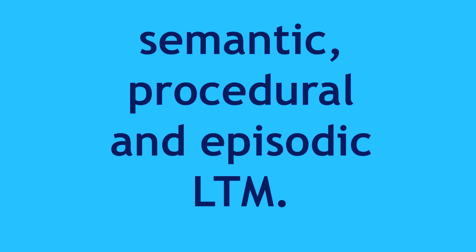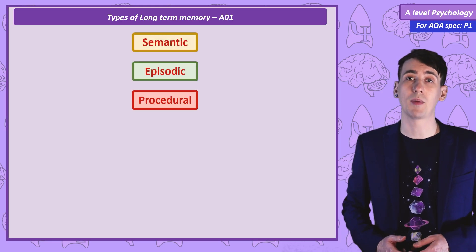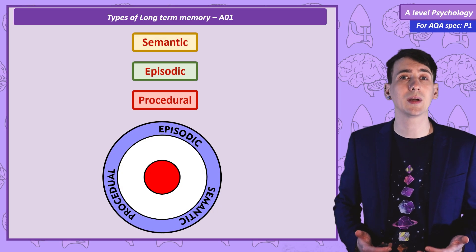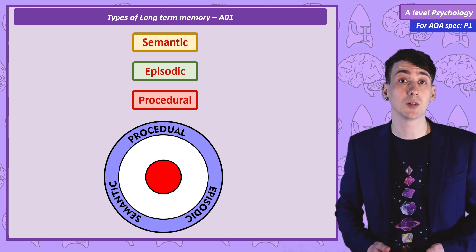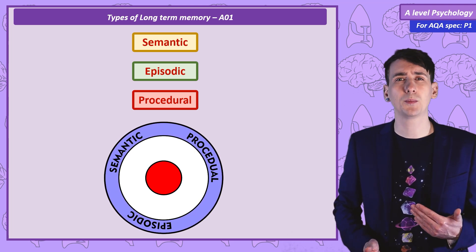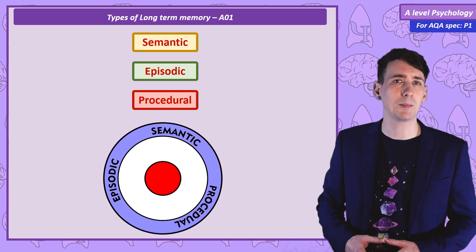Semantic, procedural, and episodic long-term memory — these are the three types of long-term memory. What I want to do is show you how we can define them as distinct processes and look at some research and evaluations that support or contradict that they are actually separate.